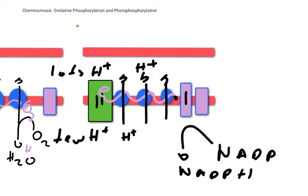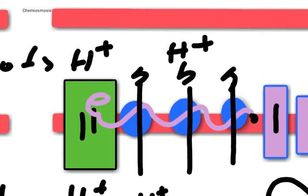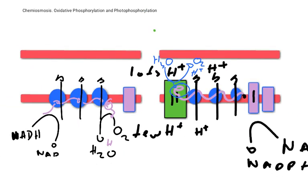We've lost an electron off photosystem 2 and we're going to have to replace that electron. We do this by taking water and splitting it in a process called photolysis. This happens inside the thylakoid interior because it also contributes to the proton gradient. We split it to give us oxygen, electrons to replace those lost in photosystem 2, and hydrogen ions to help contribute to the proton gradient.